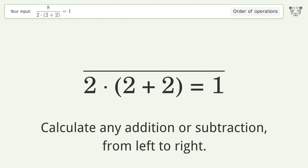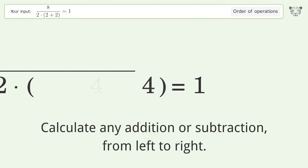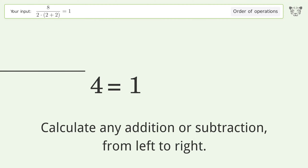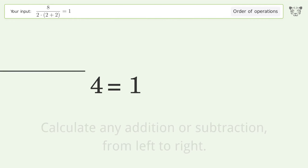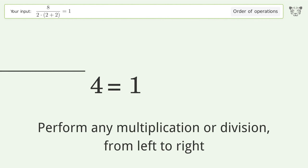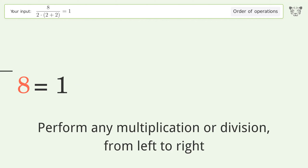Calculate the expression inside the parentheses first. Then calculate any addition or subtraction from left to right: 2 plus 2 equals 4. Next, perform any multiplication or division from left to right: 2 times 4 equals 8.